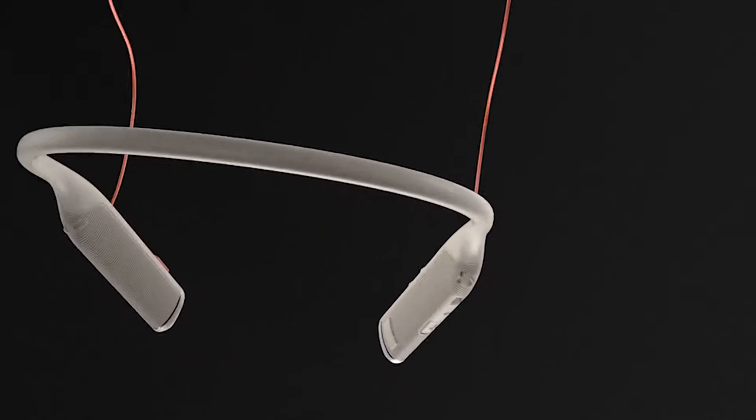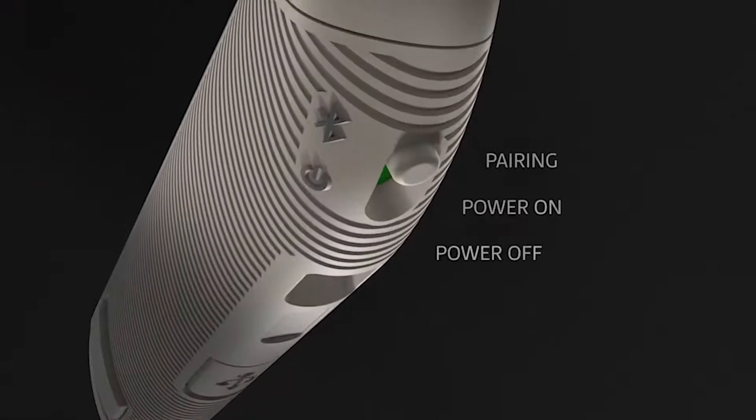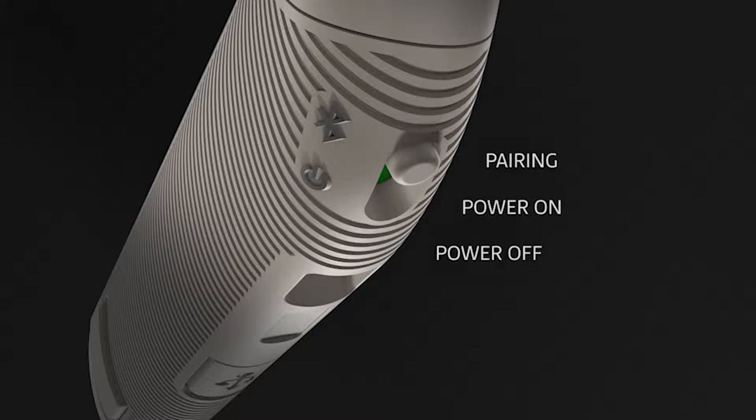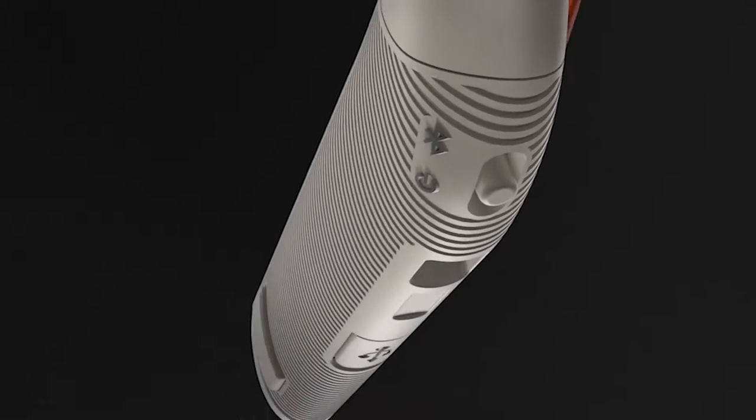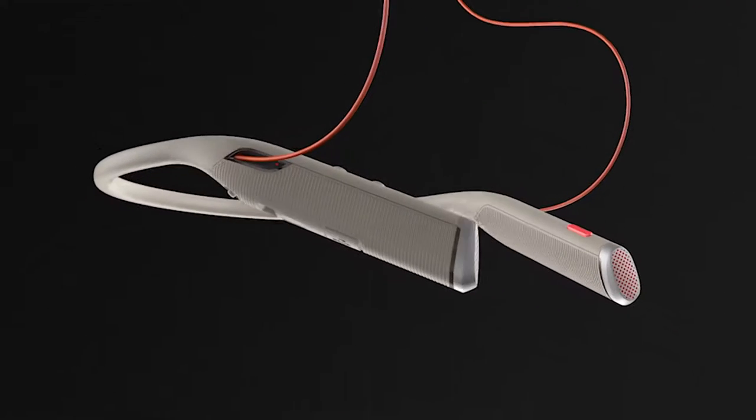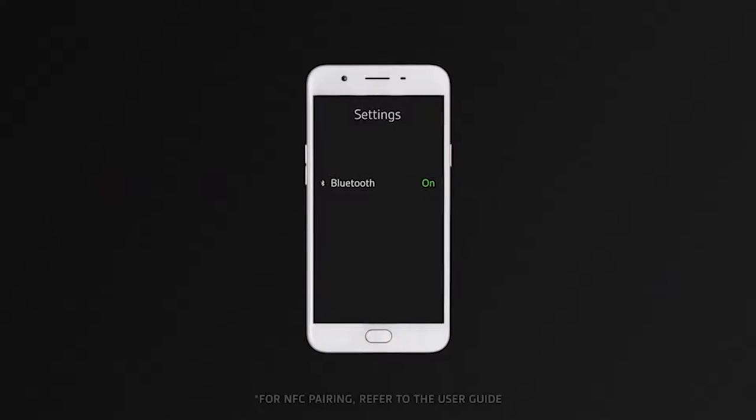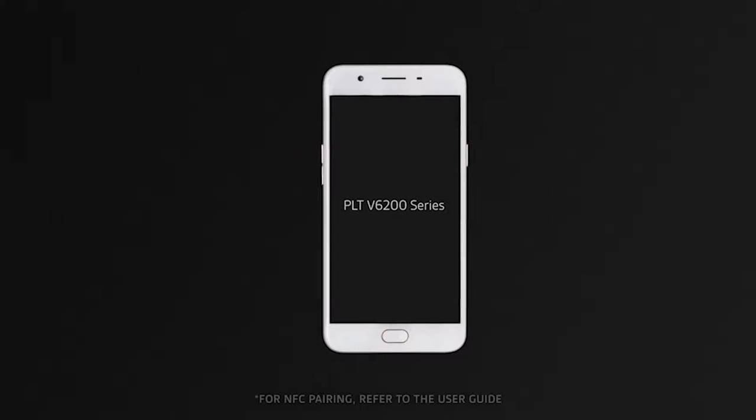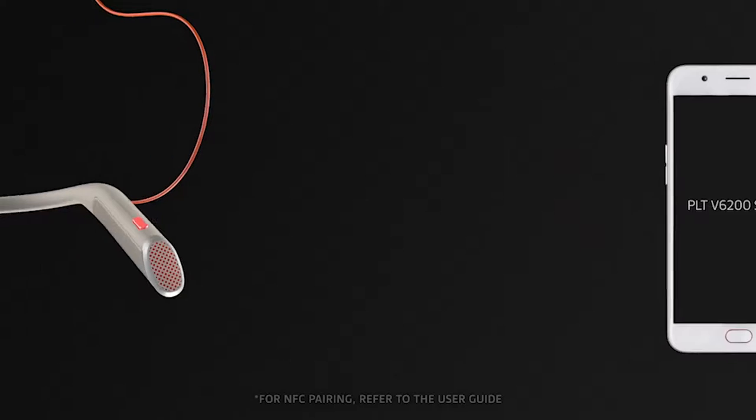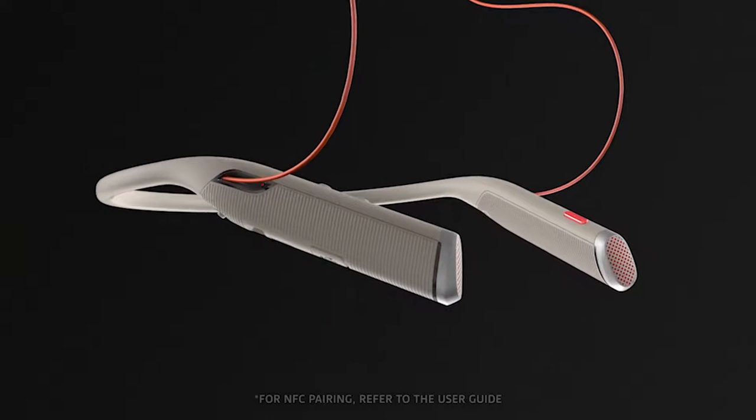To pair with your mobile device, slide and hold the power switch away from the off position until you hear pairing and the headset LEDs flash red and blue. On your mobile device go to Settings, Bluetooth on, scan for devices and select PLT V6200 series. Pairing is complete when you hear pairing successful and the headset LEDs stop flashing.